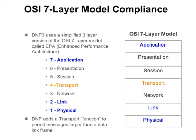DNP3 is based upon a simplified model of the OSI reference model called the Enhanced Performance Architecture, or EPA. This model consists of only three layers: application, data link, and physical.